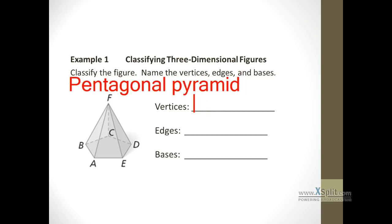Vertices, if we count the vertices, count the points. I count 1, 2, 3, 4, 5, and 6 of them. Vertices are A, B, C, D, E, and F. 6 different points.